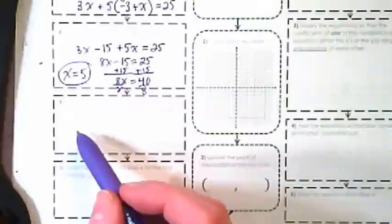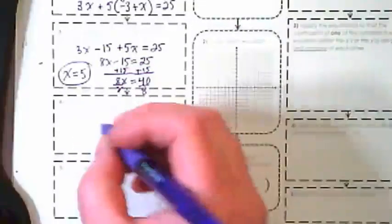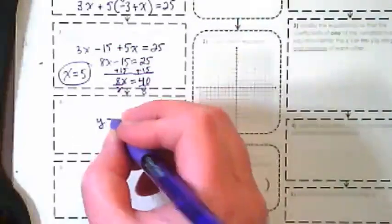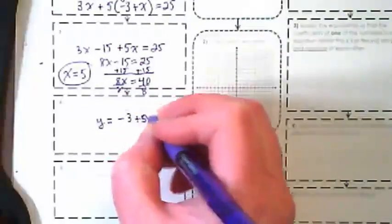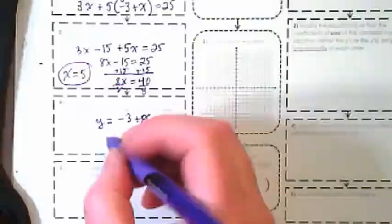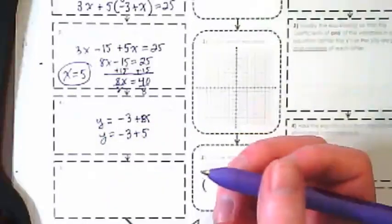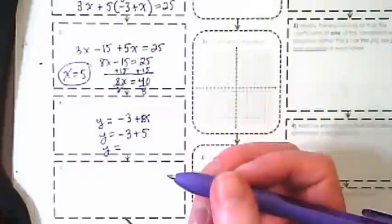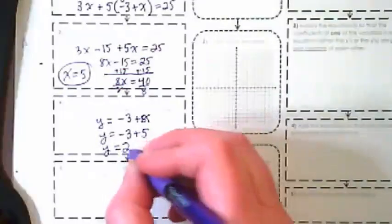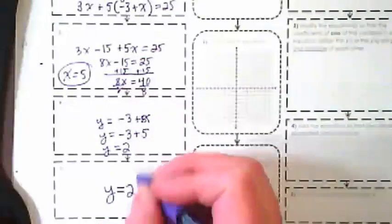Step four. Step four, substitute the value of the variable from step three into the equation with the isolated variable from step one. So we're going to rewrite y is equal to negative 3 plus x, and we're going to plug in the 5 for the x, and negative 3 plus 5 is 2, so our y is equal to 2.